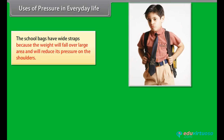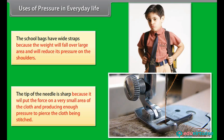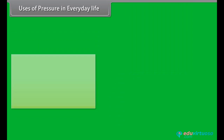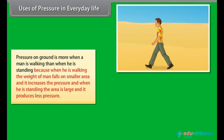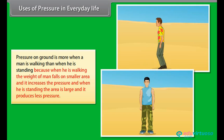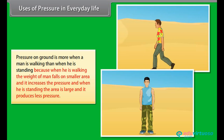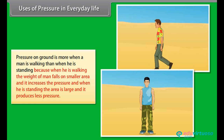Uses of pressure in everyday life: school bags have wide straps because the weight falls over a large area and reduces pressure on the shoulders. The tip of a needle is sharp because it puts force on a very small area of cloth, producing enough pressure to pierce the cloth being stitched. Pressure on the ground is more when a man is walking than when standing, because walking puts weight on a smaller area, increasing pressure.